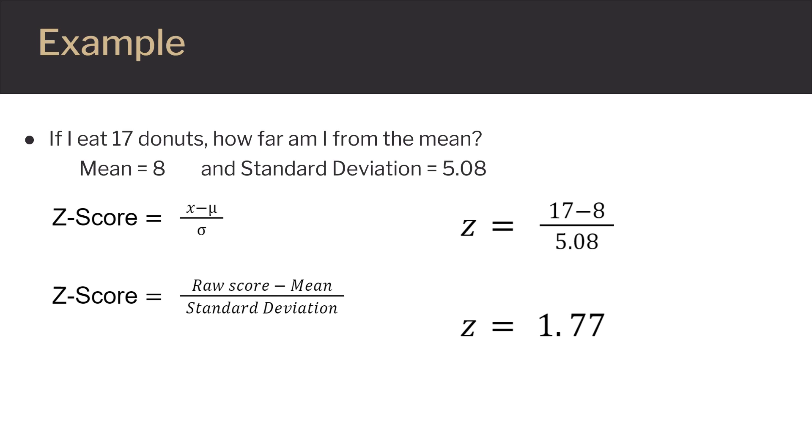For example, if I eat 17 doughnuts, how far am I from the mean? In this case, mean equals 8, and standard deviation equals 5.08. In the formula, you have your raw score minus the mean divided by standard deviation.